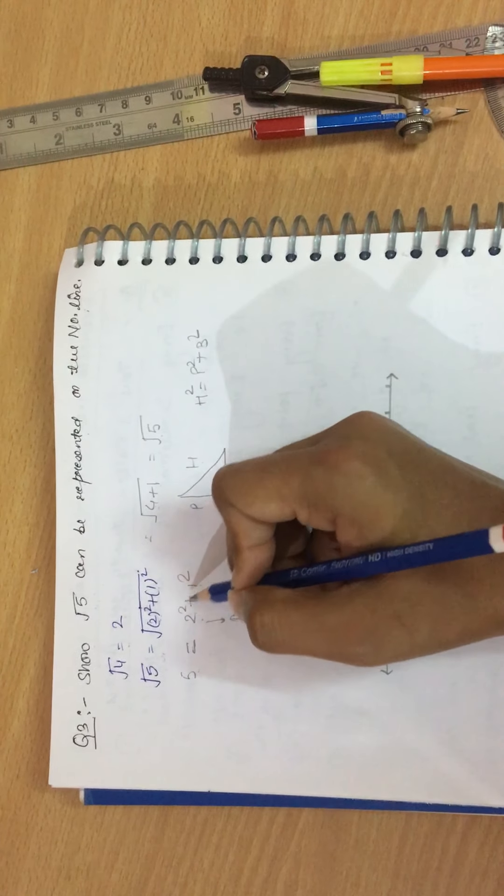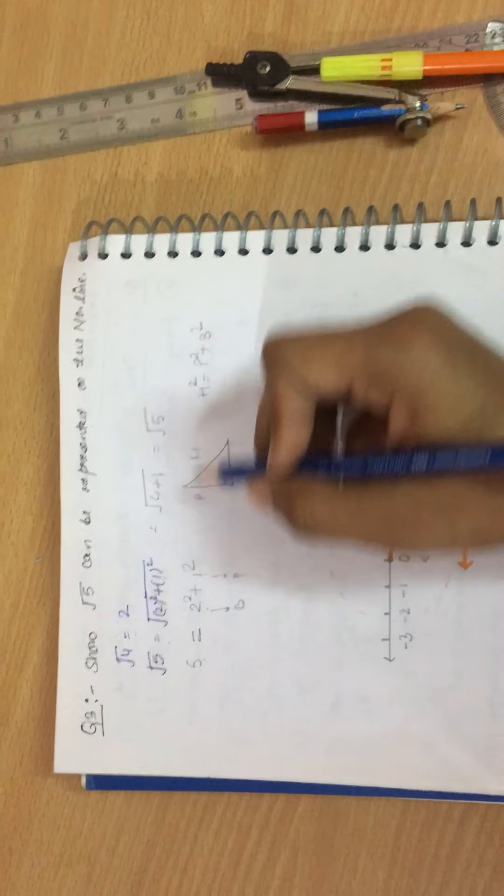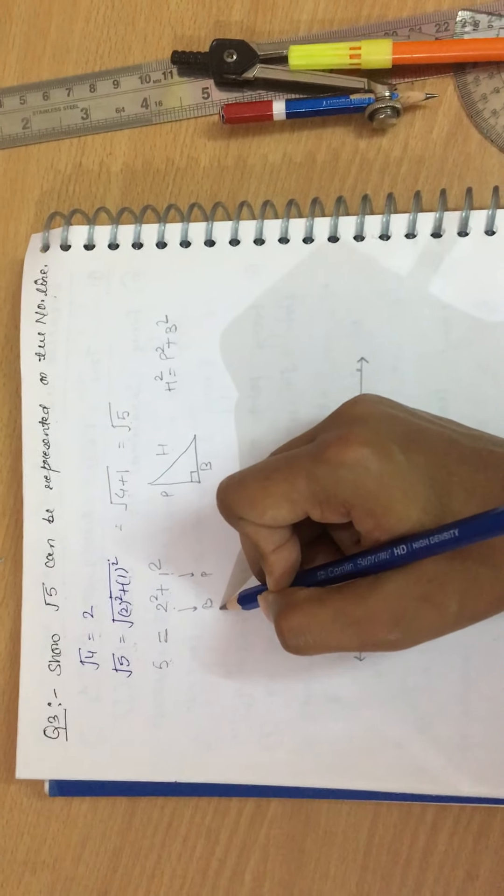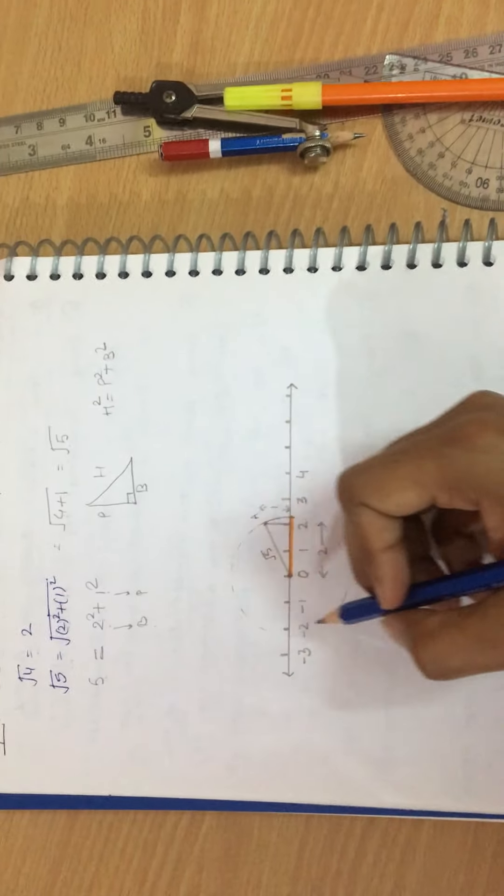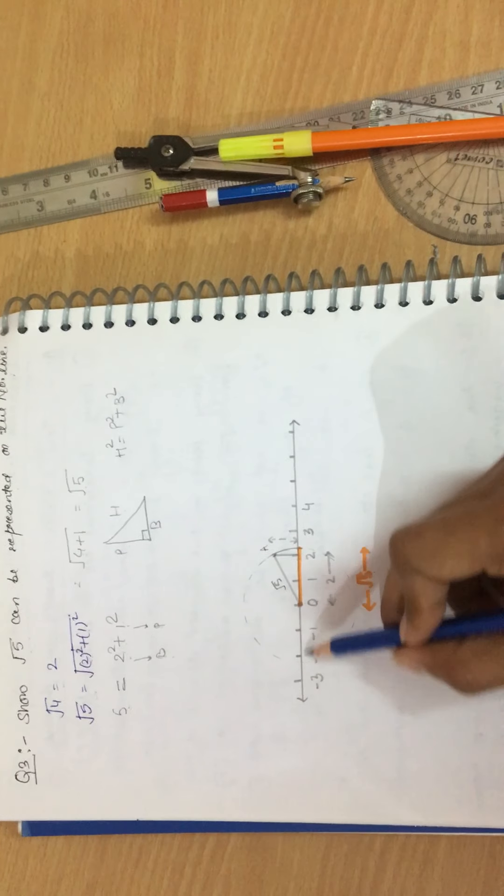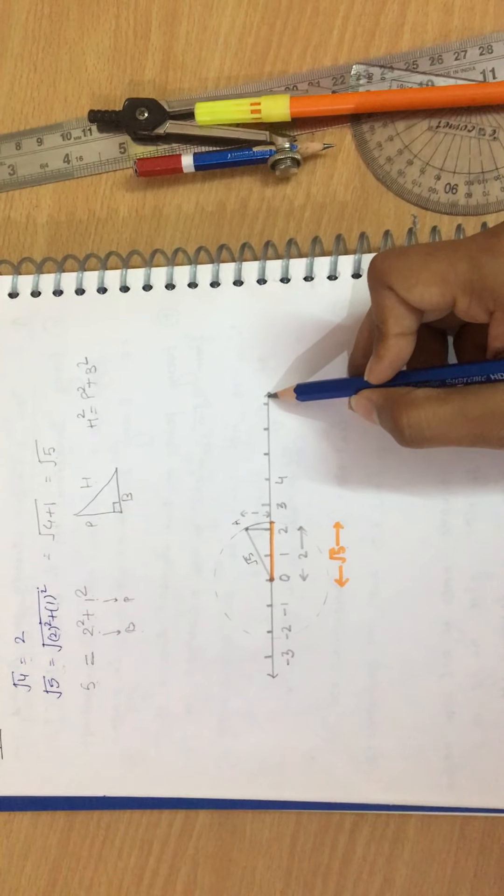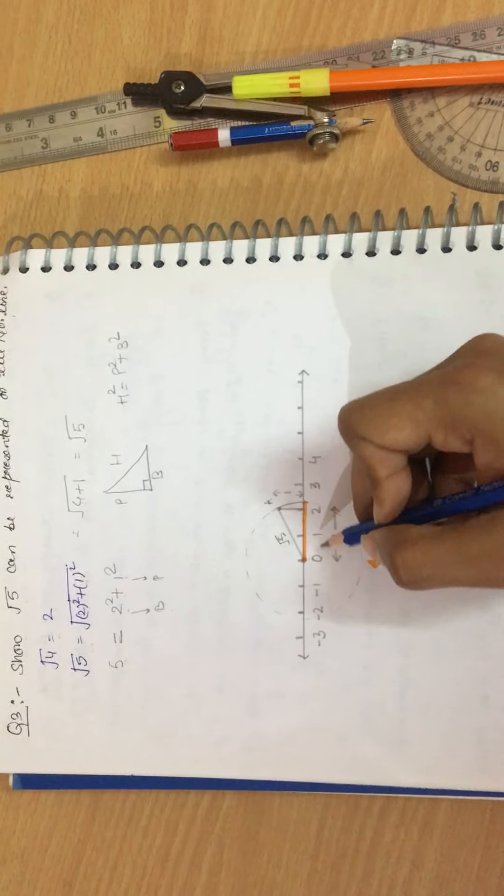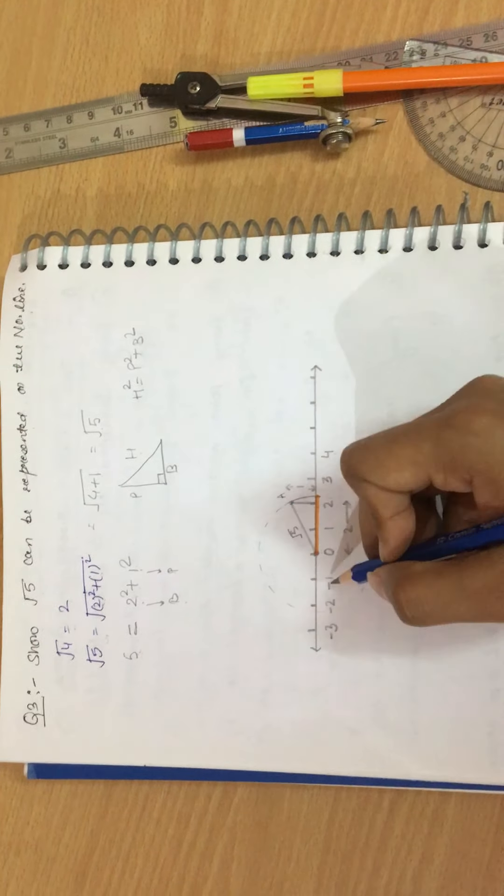Now we have studied the Pythagorean theorem, hypotenuse square is equal to perpendicular square plus base square. Taking square root both sides, we get under root 5 equals under root of 2 square plus 1 square. Comparing them both, we can identify perpendicular and base. Now let's represent on the number line.